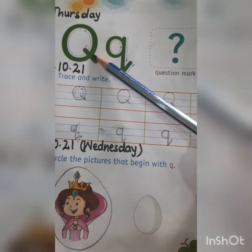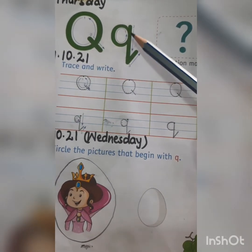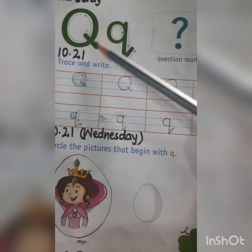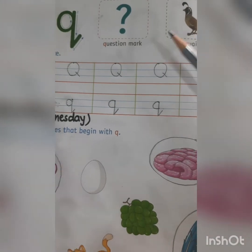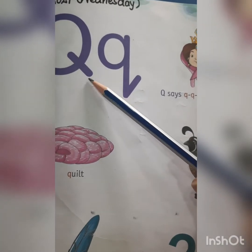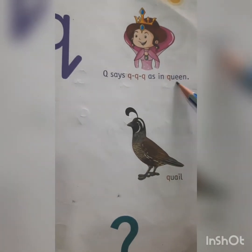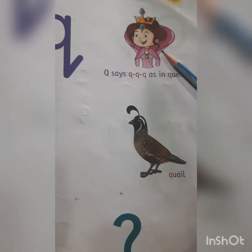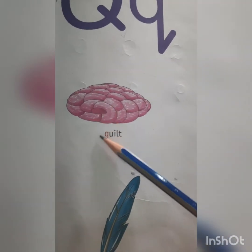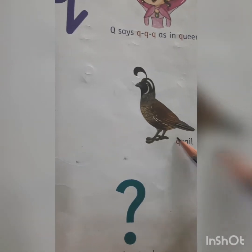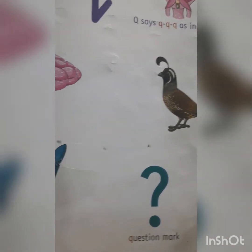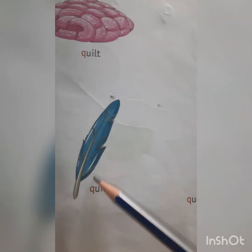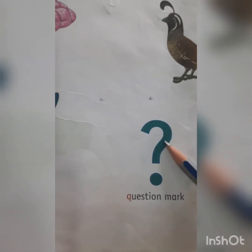Which letter is this children? This is letter Q — mama letter Q and baby letter Q. What is the sound of letter Q? It's 'Q' in queen. Spelling of queen: Q-U-E-E-N. Queen. Say the name of this picture children — queen. Q-U-I-L-T. Quilt. Q-U-A-I-L. Quail. Q-U-I-L-L. Quill. Q-U-E-S-T-I-O-N M-A-R-K. It's question mark. Right children?